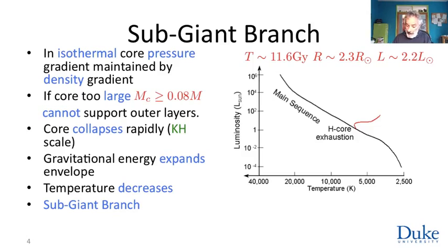Notice the sun will only last about 700 million years as a subgiant, whereas it lasted 10 billion as a main sequence star. Subgiants are more rare, but because they are luminous, notice they are, the sun will be more luminous at the end of its subgiant phase. We can see some of them.